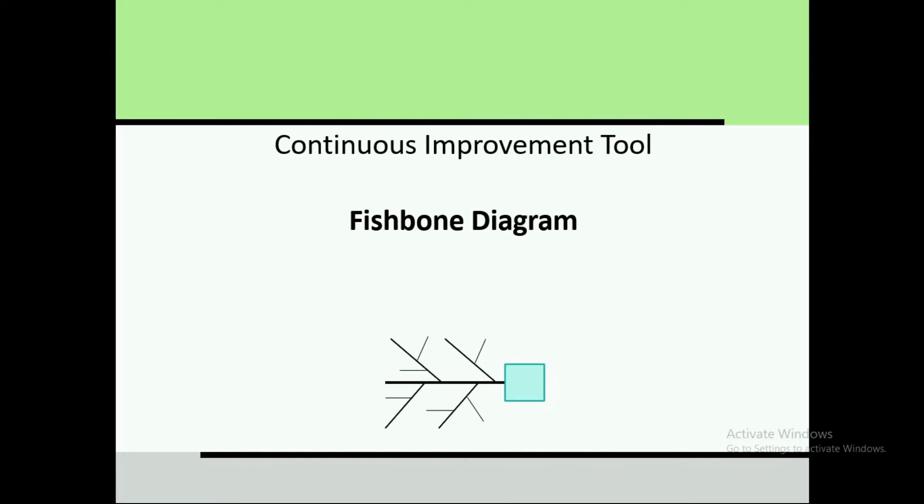In this video we will discuss the fishbone diagram, which is a very important tool in continuous improvement, total quality management, and project management. It is used to identify the root cause of any problem. Project managers and quality engineers use it when they find a problem in operations. If you know the root cause of a problem, you can eliminate and resolve that problem.